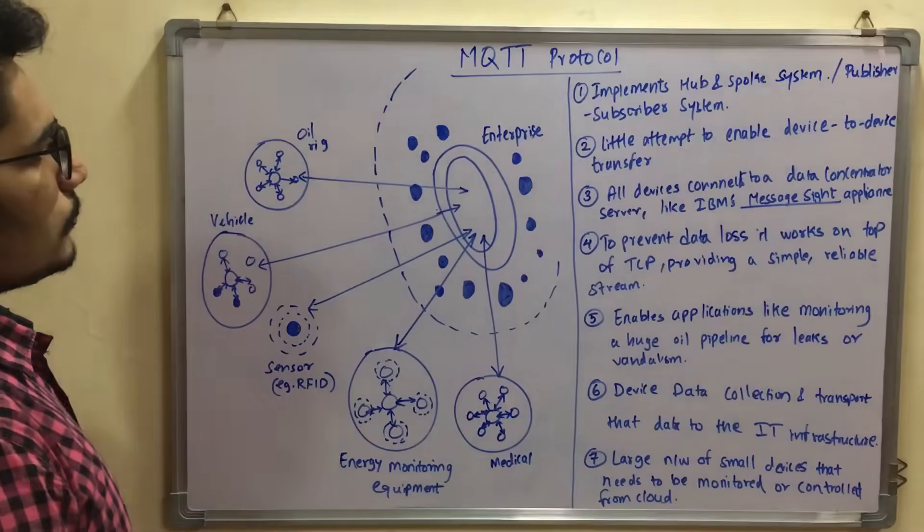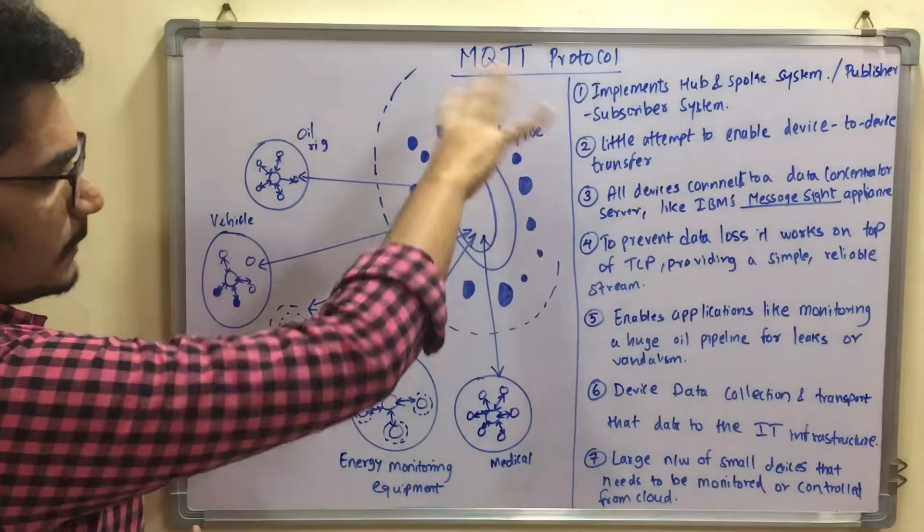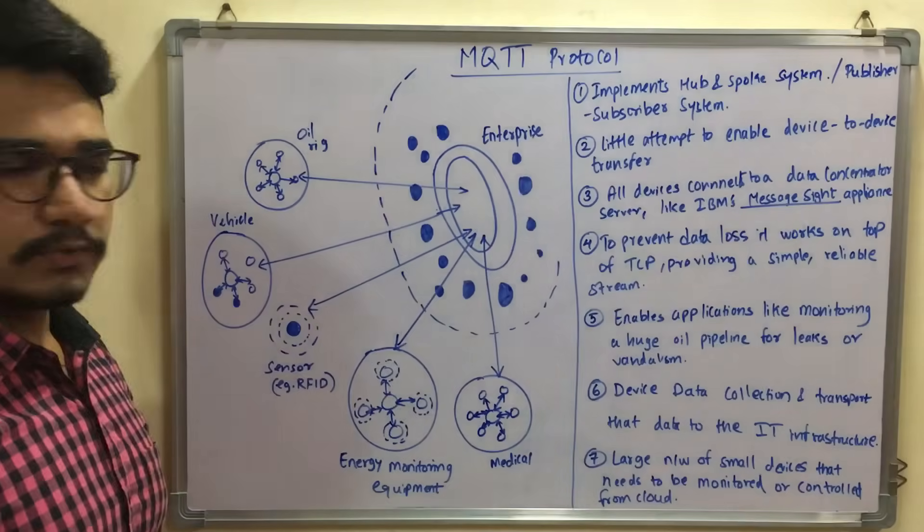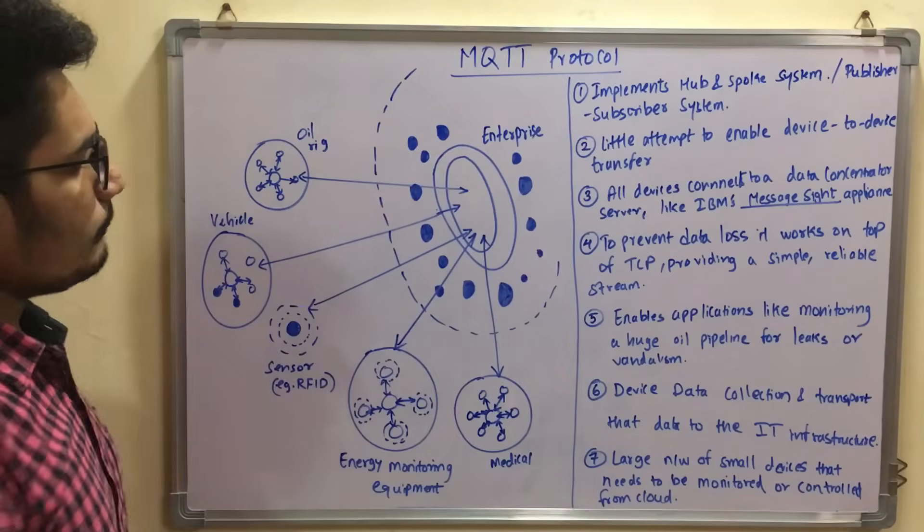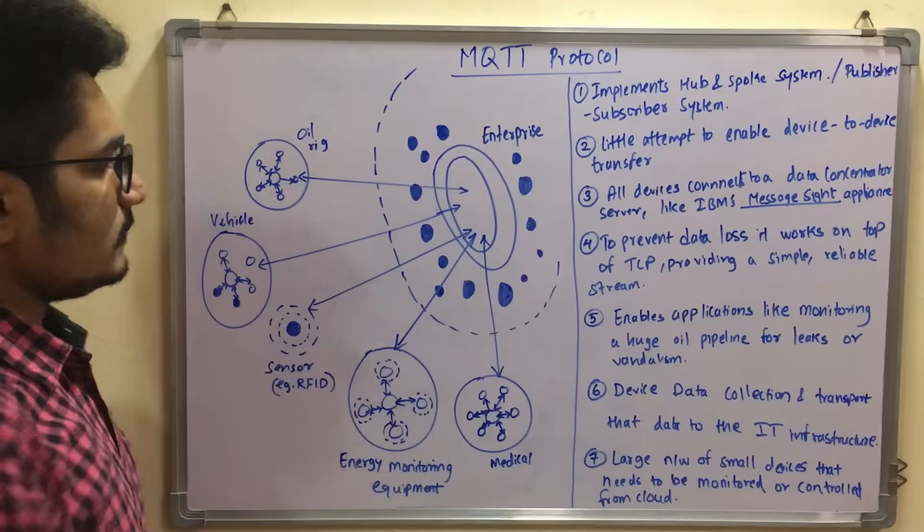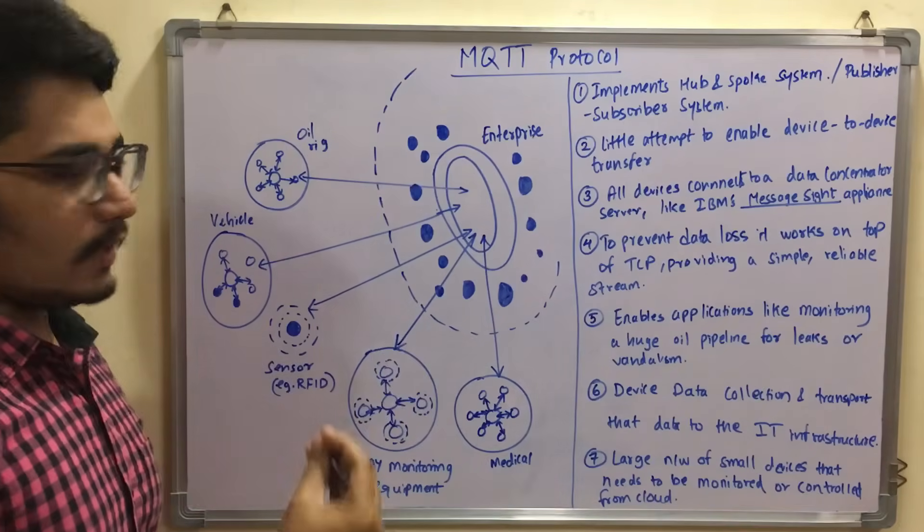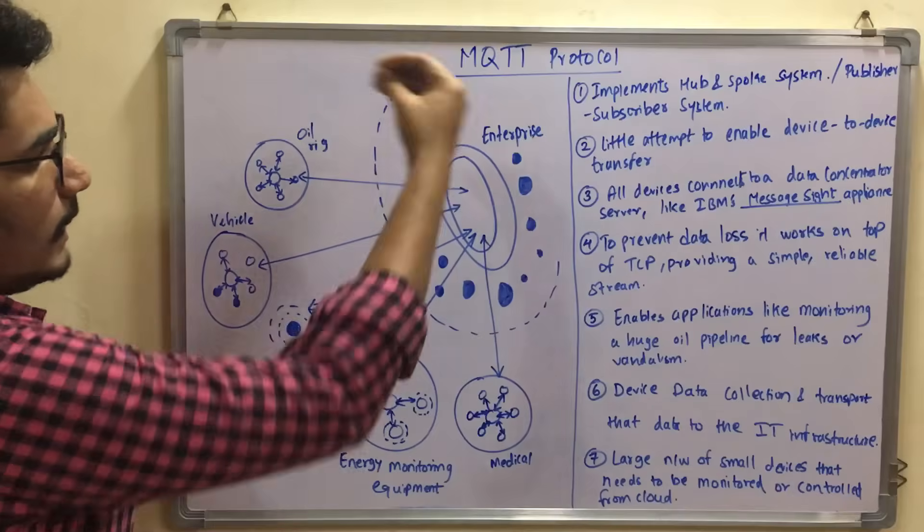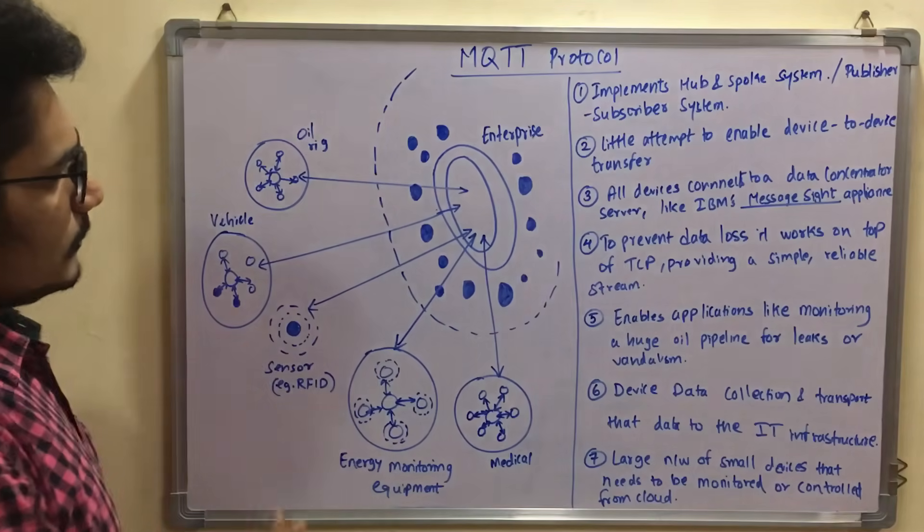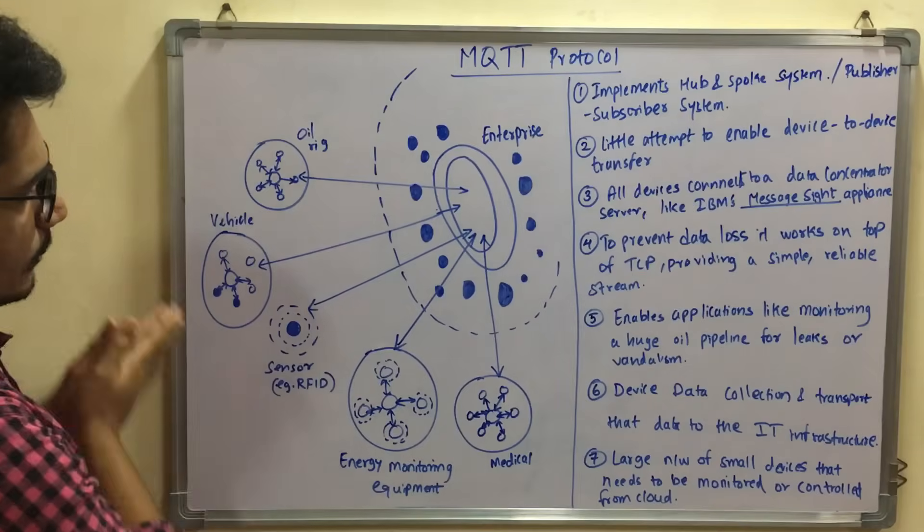First of all, we have this enterprise setup here and there are two rings or two shells in fact you can say, and there are some blue spots which are there inside this enterprise. These blue spots are nothing but the message queues which are used in MQTT protocol. Then you have some kind of clusters outside this which are the oil rigs, vehicles, RFID sensors, energy monitoring equipment, as well as medical systems.